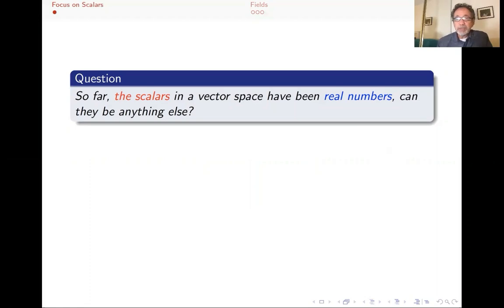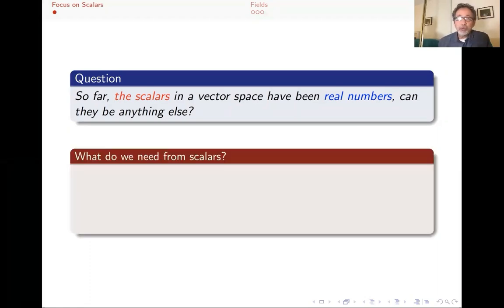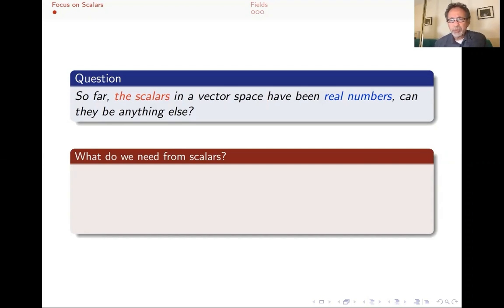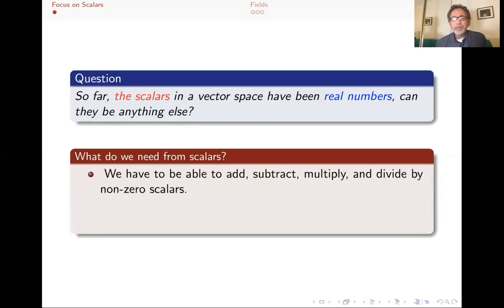The scalars in a vector space have often been real numbers. Can they be anything else? To answer that question, maybe we should think about what we need the scalars to do. Scalars don't seem to be the important show in vector spaces — they seem to be a secondary item. That's actually not the case, as we might discuss towards the end of these lectures. What do we need from scalars?